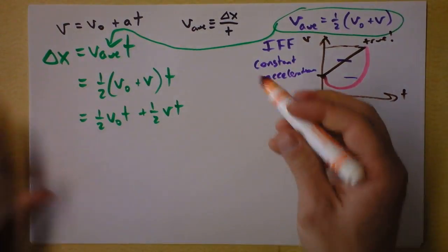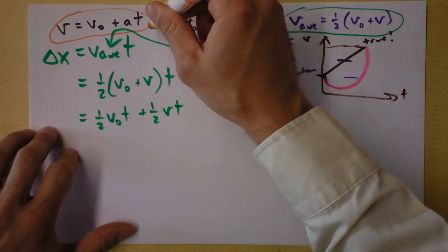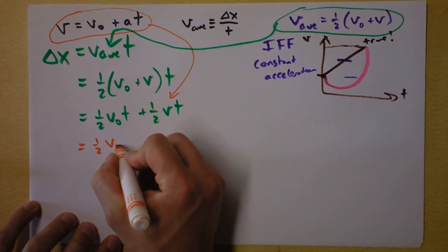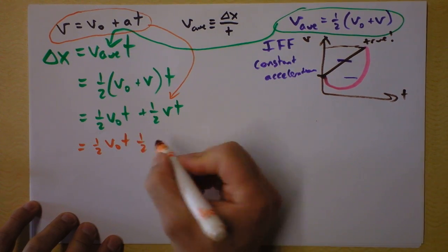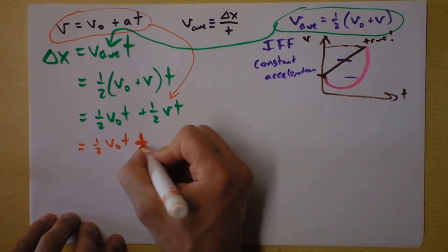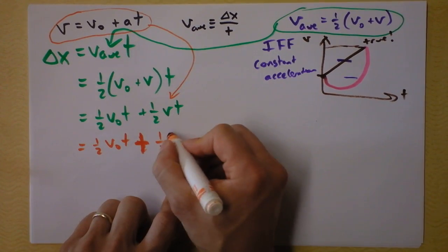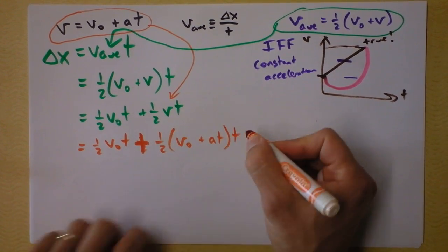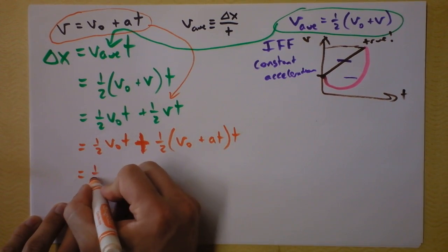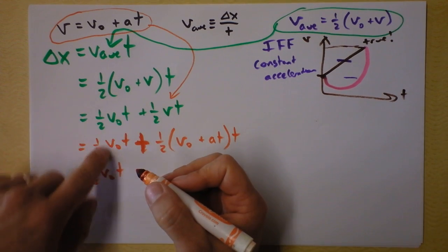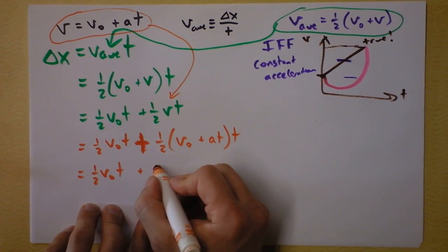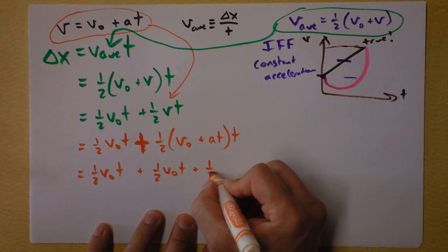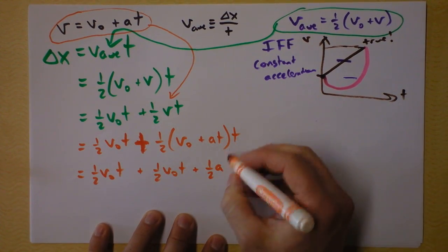Next step is to take the first equation — we haven't used it yet — and plug it in for final velocity. The first term copies as it was: one-half v-naught t. Plus, now I have one-half times (v-naught plus at), and the whole thing has to be multiplied by t again. So we have one-half v-naught t, plus distributing: one-half v-naught t, plus one-half acceleration times time times time — that's time squared.